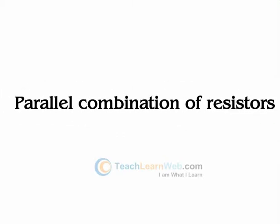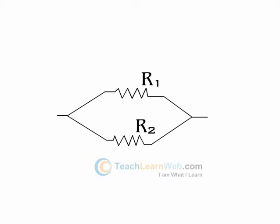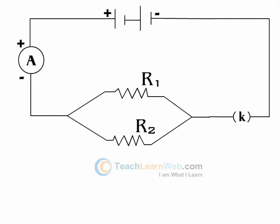Parallel Combination of Resistors. The two resistors R1 and R2 are connected in parallel to a battery of potential V as shown in the figure.